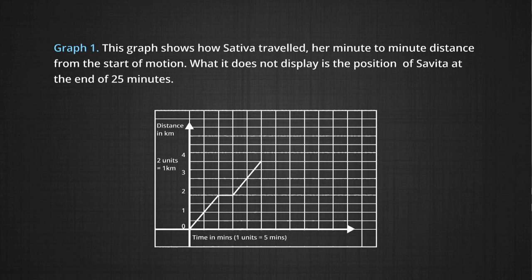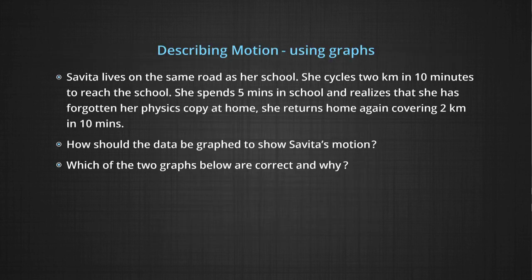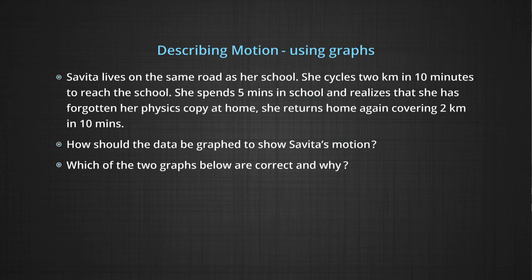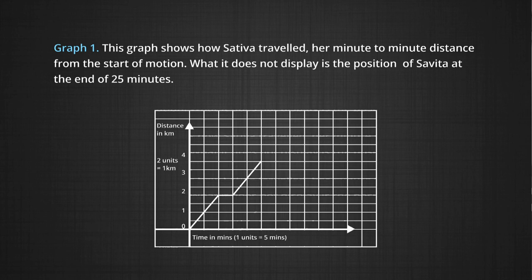So x or position would be on the y-axis. Let us consider our problem again. Savita lives on the same road as her school. She cycles 2 kilometers in 10 minutes to reach the school. She spends 5 minutes in school — we will assume she is not moving or having a displacement. And she realizes she has forgotten her physics copy at home. She returns home covering 2 kilometers in 10 minutes. On the x-axis we have time in minutes, taking 1 unit to represent 5 minutes, and on the y-axis we have distance in kilometers, choosing 2 units to be equivalent to 1 kilometer.